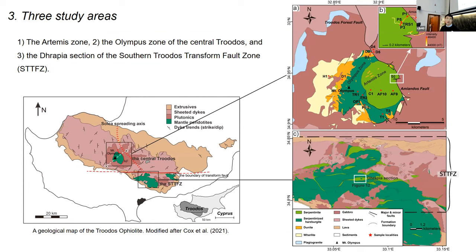We consider three study areas in the Troodos ophiolite, including the Athos zone and the Olympus zone in the central Troodos. We also consider a study area in the south Solea transform fault zone, because in the transform fault zone the serpentinization history is quite clear and related to the evolution of the transform fault. So we can compare the magnetic signatures of rocks from the central Troodos and the Solea transform fault zone to help understand the tectonic background.